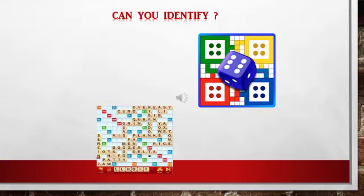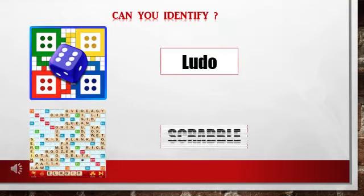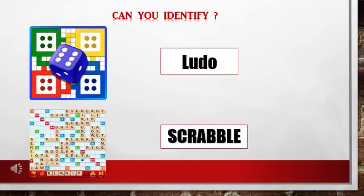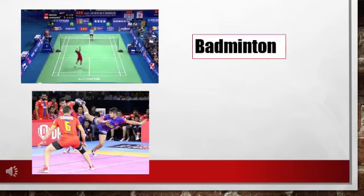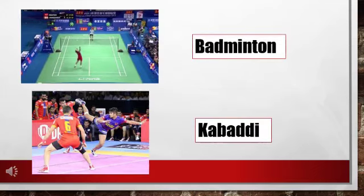Students, can you identify which games are these? The first one is Ludo and the second one is Scrabble, and both of these are indoor games. Now, can you identify which games are these? Yes — the first one is badminton and the second one is Kabaddi, and both of them are outdoor games.